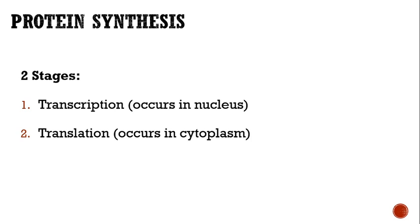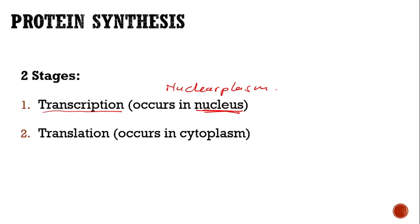Protein synthesis happens in two stages: transcription and translation. Transcription occurs mainly in the nucleus — specifically in the nucleoplasm near the nucleolus, where RNA is made. Translation occurs in the cytoplasm, outside the nucleus.